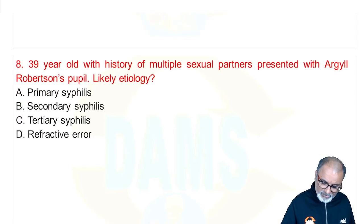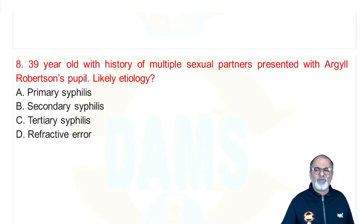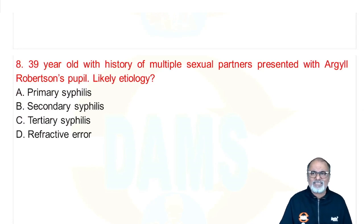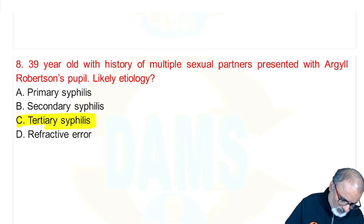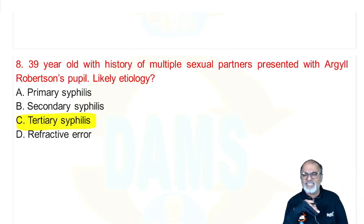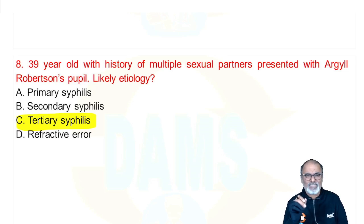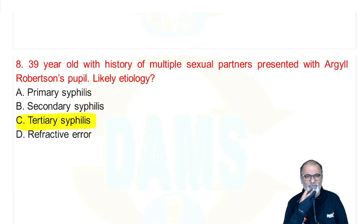A patient with multiple sexual partners presents with Argyll Robertson pupils — a typical one-liner. Where there is Argyll Robertson pupil, think of tertiary syphilis. For congenital syphilis: Olympian brow, Hutchinson's teeth. Secondary syphilis: maculopapular rash. Primary syphilis: painless sore/chancre. Cardiovascular involvement with Argyll Robertson pupils — think tertiary syphilis.